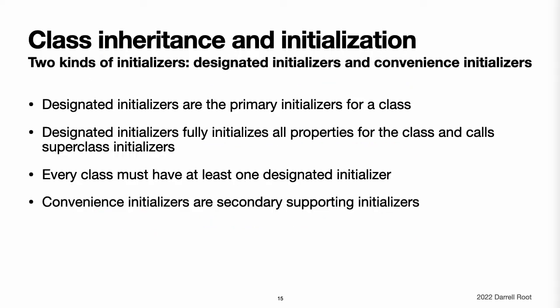Class inheritance and initialization. All of a class's stored properties, including any properties the class inherits from its superclass, must be assigned an initial value during initialization. Swift defines two kinds of initializers for class types to help ensure all stored properties receive an initial value. These are known as designated initializers and convenience initializers.